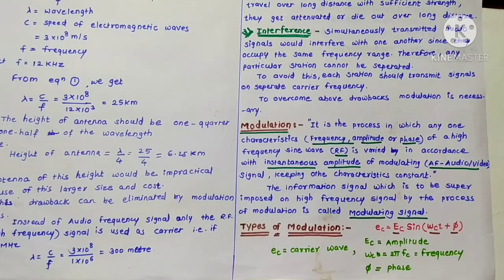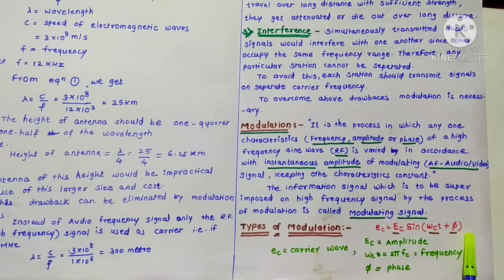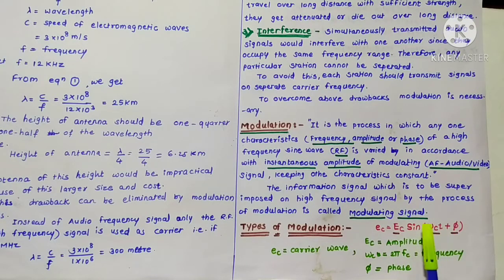The variation is in accordance with the instantaneous amplitude of the modulating (lower frequency, i.e., audio frequency) signal, while keeping the other two characteristics constant. To repeat: modulation is the process in which only one characteristic — either frequency, amplitude, or phase — is varied, keeping the other two constant.